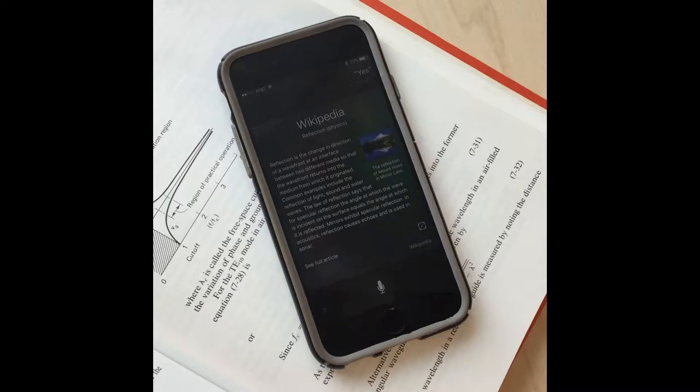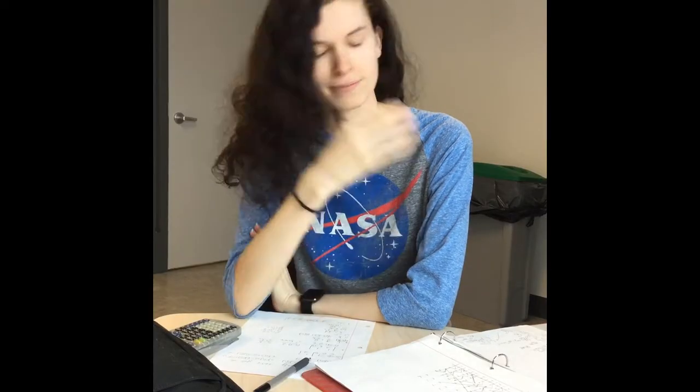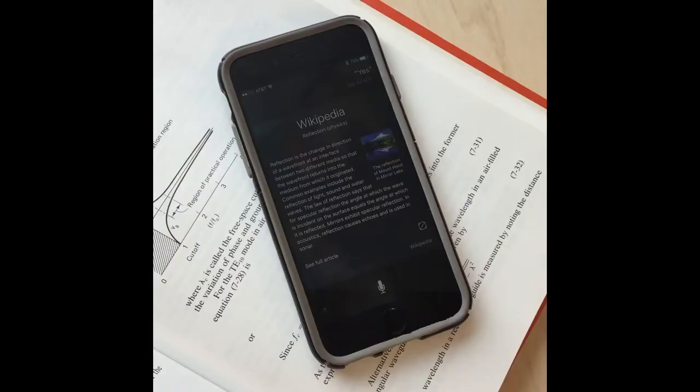The law of reflection says that for specular reflection, the angle at which the wave is incident on the surface equals the angle at which it is reflected. Mirrors exhibit specular reflection. In acoustics, reflection causes echoes and is used in sonar.